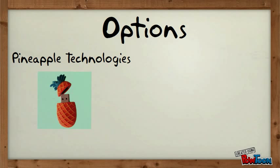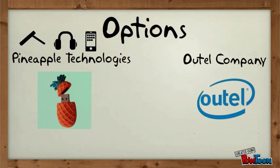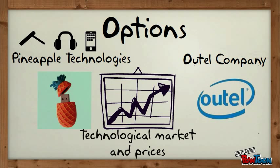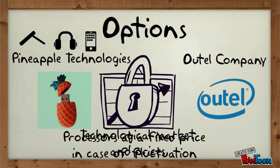For example, Pineapple Technologies produces tablets, MP3 players and cell phones, built with Outtel company processors. There has been an extreme growth in the technological industry, but the market is not growing at the same rate, which is why prices of technological components have been fluctuating. As a result, and in order to hedge the risk of the fluctuating production, Outtel company agrees with Pineapple Technologies to sign an options contract.